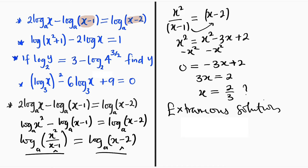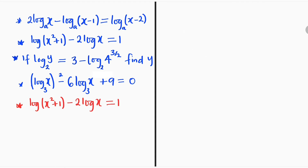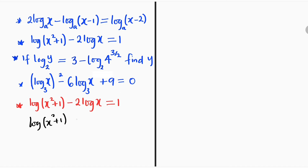So now let us move on to the second problem. We have log of (x² + 1) minus 2 multiplied by log of x, and to the right we have 1. We have log of (x² + 1) minus log of x², and to the right we have log 10. The reason is that log 10 is also equal to 1. Remember, all of these logs are in base 10, so log 10 base 10 is equal to 1.